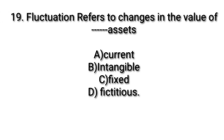Fluctuation refers to changes in the value of Dash assets. Answer option A: Current assets. Fluctuation refers to changes in the value of current assets.